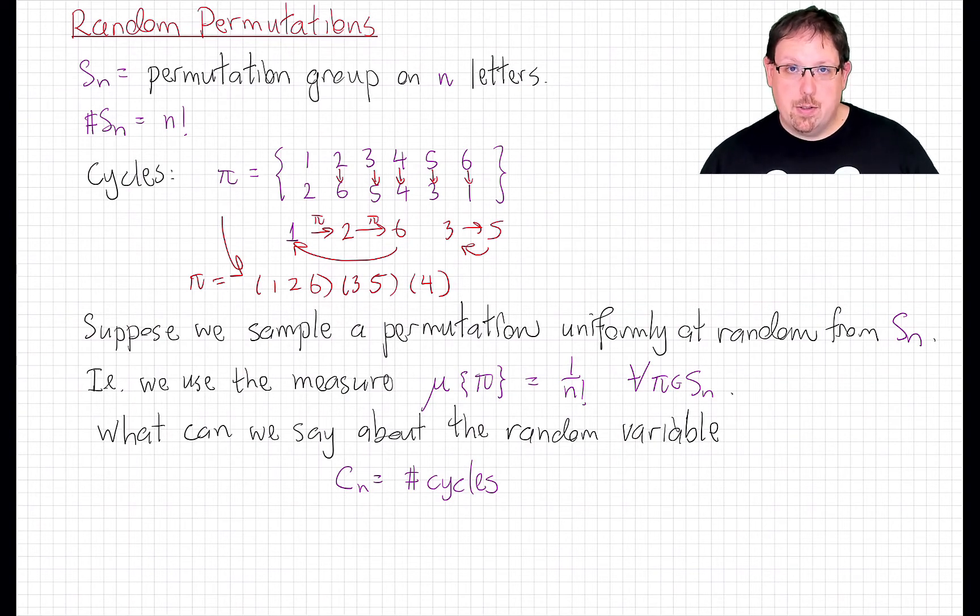A huge swath of combinatorics and algebra deals with the properties of this permutation group. But let's think about it probabilistically right now. We can think of S_n as a probability space, a discrete but large finite probability space. And then we can talk about selecting a random permutation. And we can talk about random variables defined on that probability space. Those are usually referred to as permutation statistics.